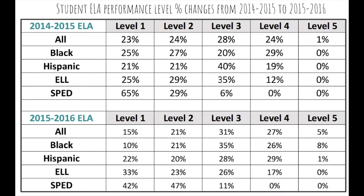This chart illustrates ELA student performance level changes from 2014-15 to 2015-16. We focus on these two years because the 2013-14 data used a different state assessment. Black and Hispanic students show an overall shift from scoring at levels 1 and 2 to scoring at levels 3, 4, or 5. ELL students showed an 8% increase in students scoring at a level 1, but also a 5% increase in students scoring at a level 4, which is a point of growth.